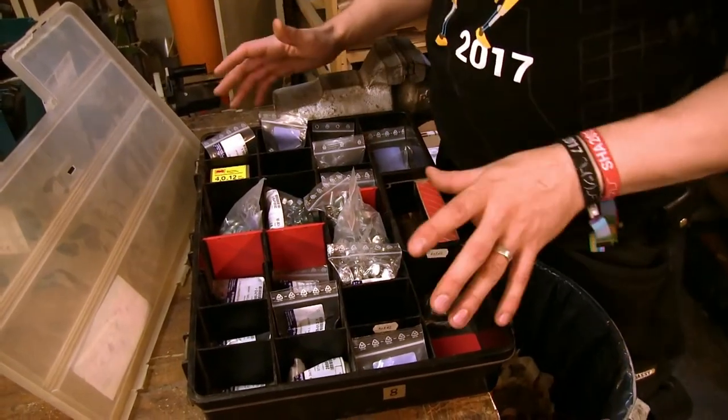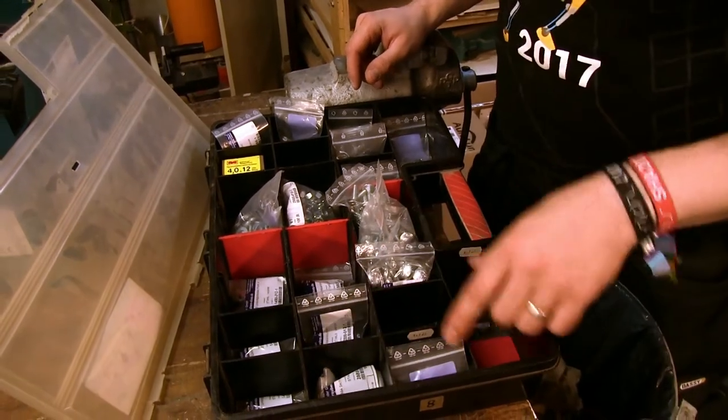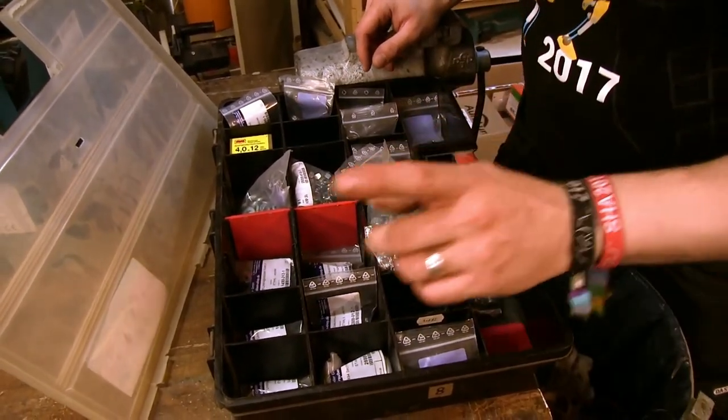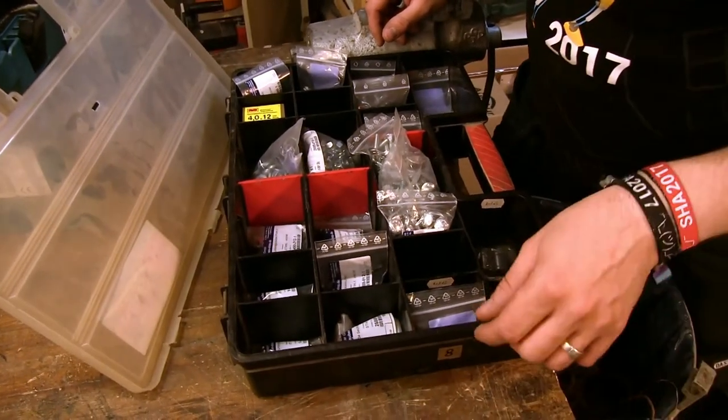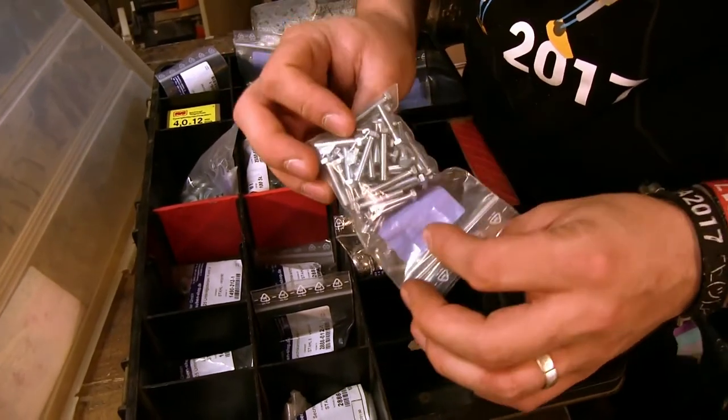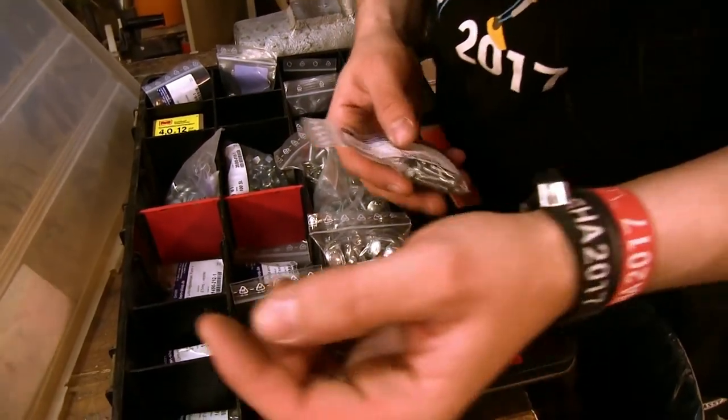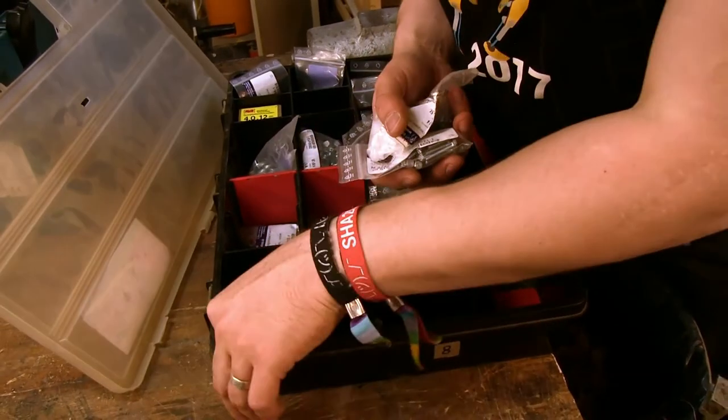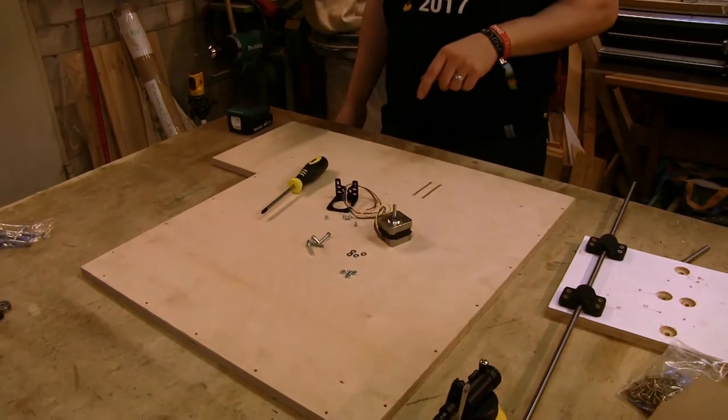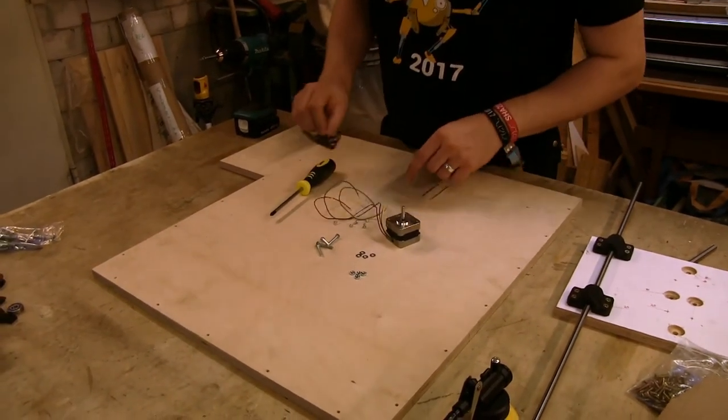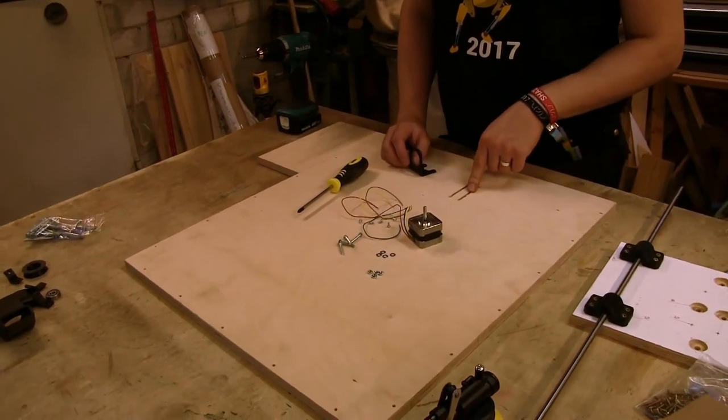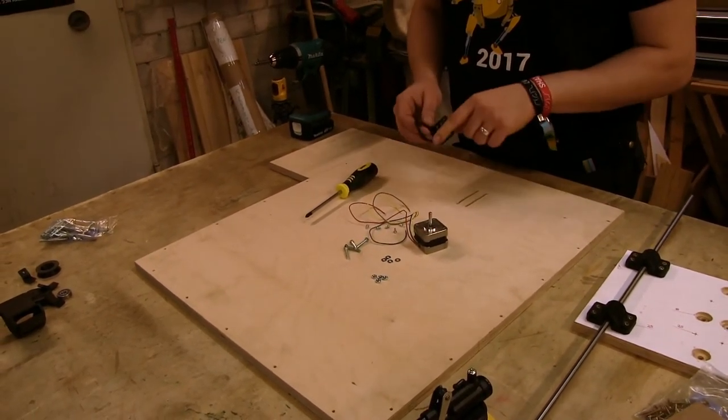These are all the screws for the project and they are sorted by size. We have M4, M5, M6 and M8. I said 4 by 25 and these must be the 4 by 25 hexagon head. Yes, perfect, good. Then we also need the nuts and the washers for that. I now have the right screws, I just looked them up.